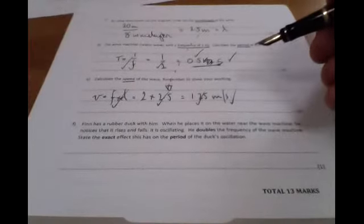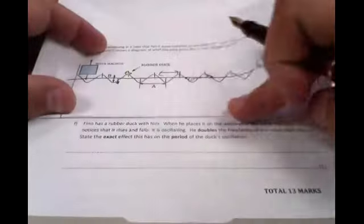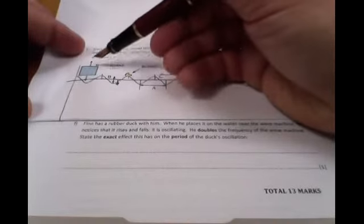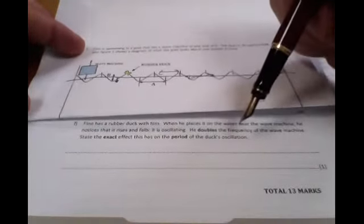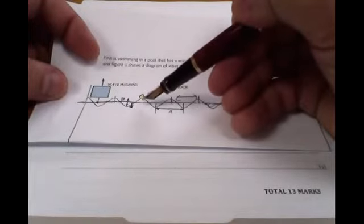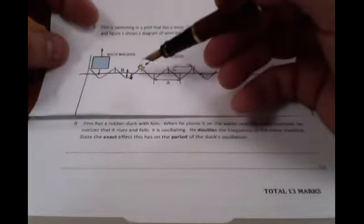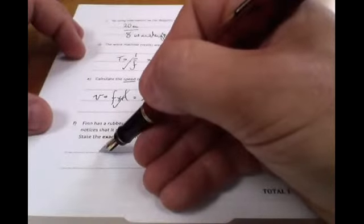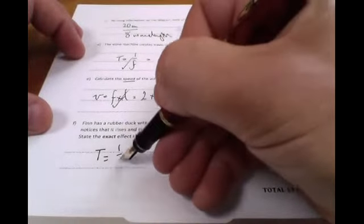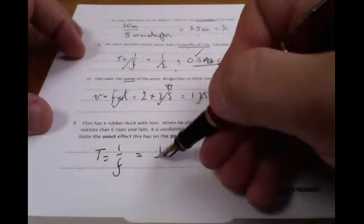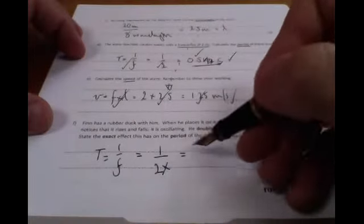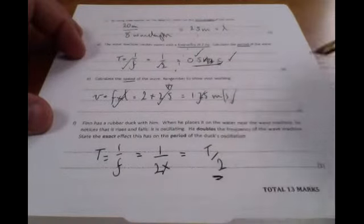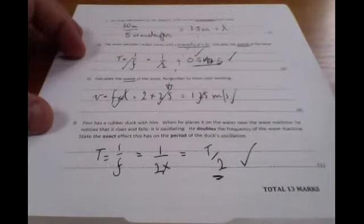The next one says he places the rubber duck near the wave machine. He notices that it oscillates. He doubles the frequency, so this moves twice as fast. What happens to the period of the duck's oscillation? Well, you can think about this intuitively: if you double the frequency, you'll get twice as many in a second, so the time period should half. However, if you want to do it in terms of an equation, the time period is 1 over f. So if the bottom part of this fraction is doubled, then the time period is halved.